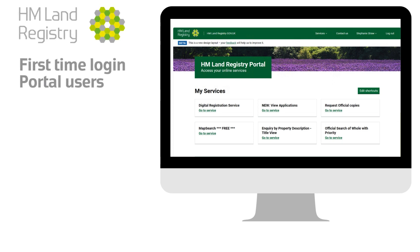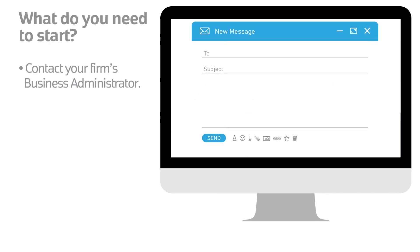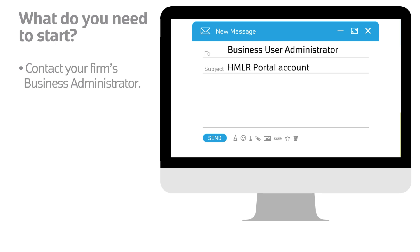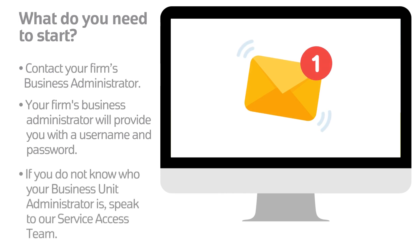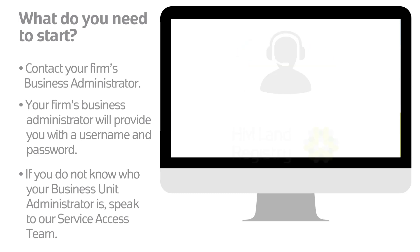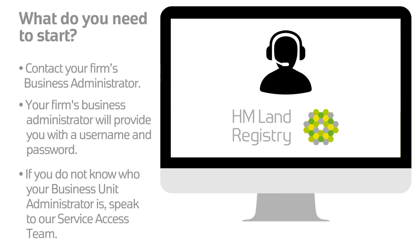If you are logging into the HM Land Registry portal for the first time, you need to contact your business user administrator in your firm who has administrative services and can create a portal account for you. Your firm's business administrator will provide you with a username and password. If you do not know who your business unit administrator is and a colleague is unable to assist, you need to contact HM Land Registry and speak to our service access team.